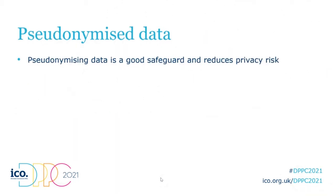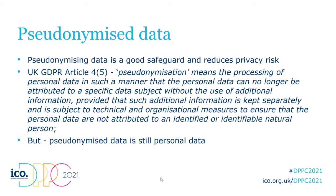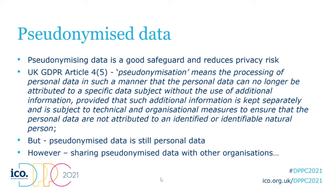Pseudonymized data is mentioned throughout the GDPR and is a good privacy safeguard — it provides security and reduces privacy risk by hiding the identity of individuals. It is defined under Article 4.5 of the UK GDPR as data that cannot be re-identified without combining it with other information held separately within the organization, with controls to prevent malicious joining. Crucially, pseudonymized data is not anonymous — it is still personal data under GDPR and those rules still apply. However, under some circumstances pseudonymized data may be considered anonymized, depending strongly on whether re-identification is reasonably likely.